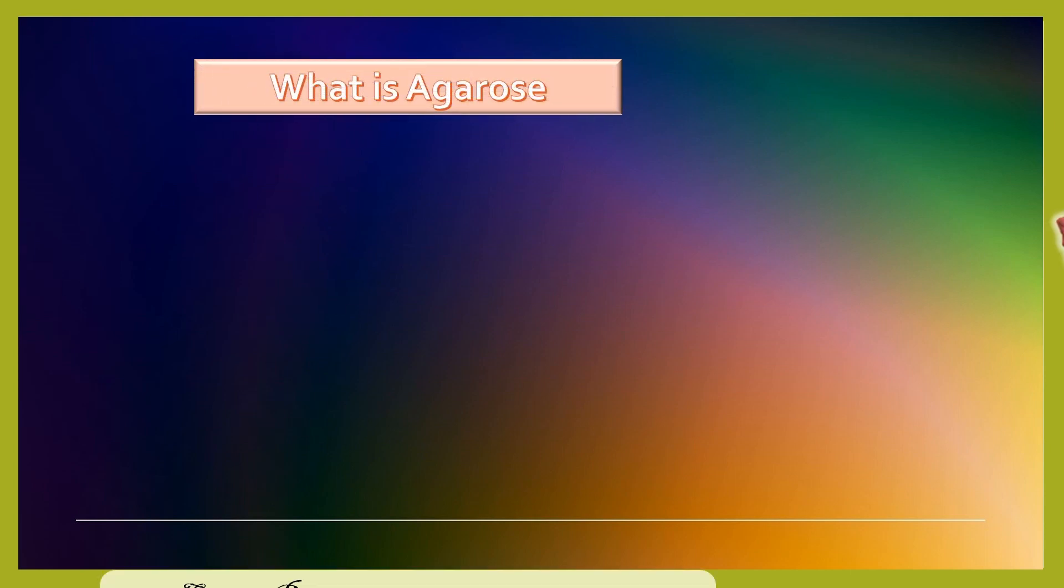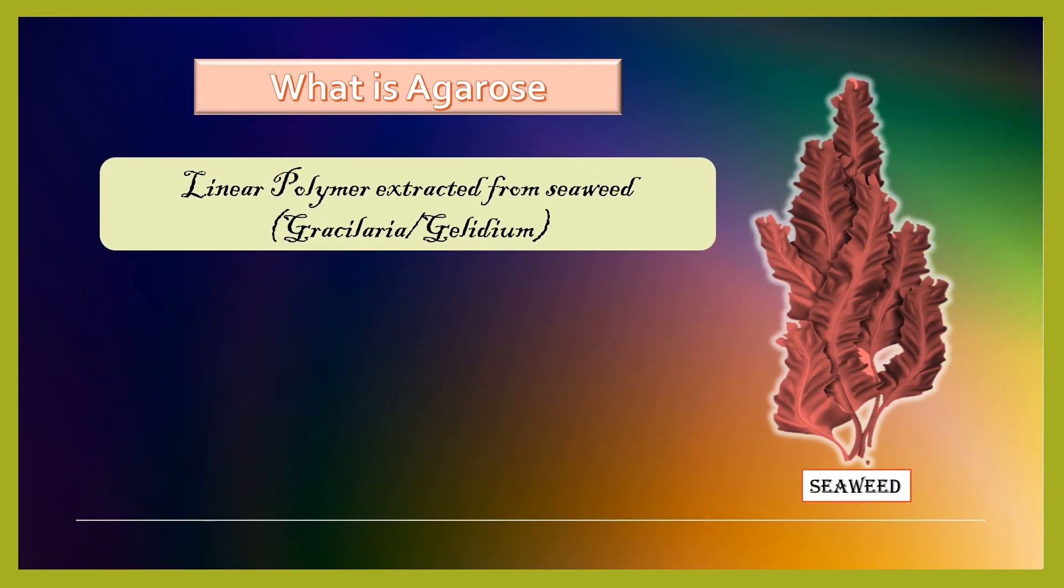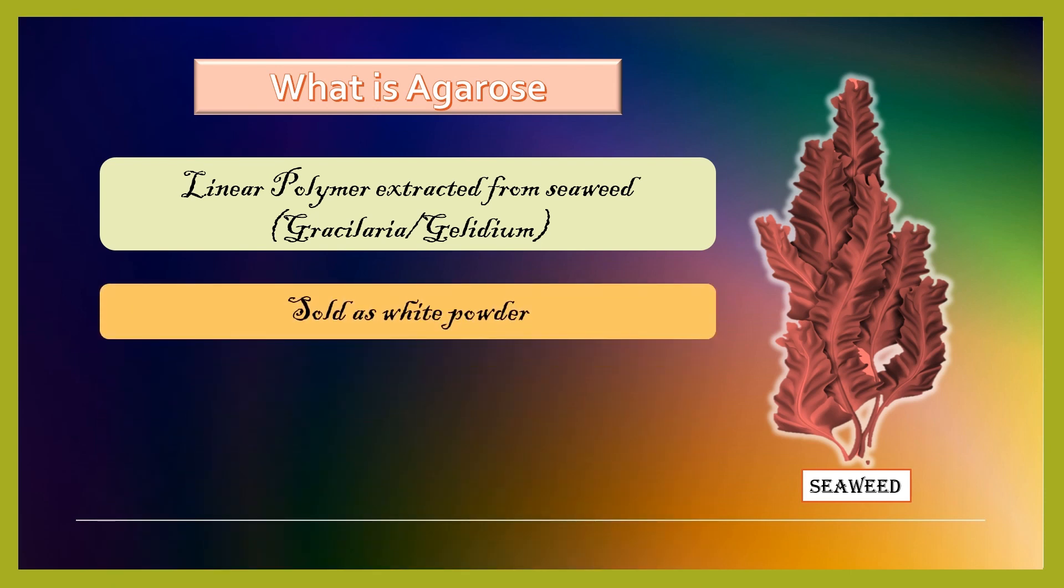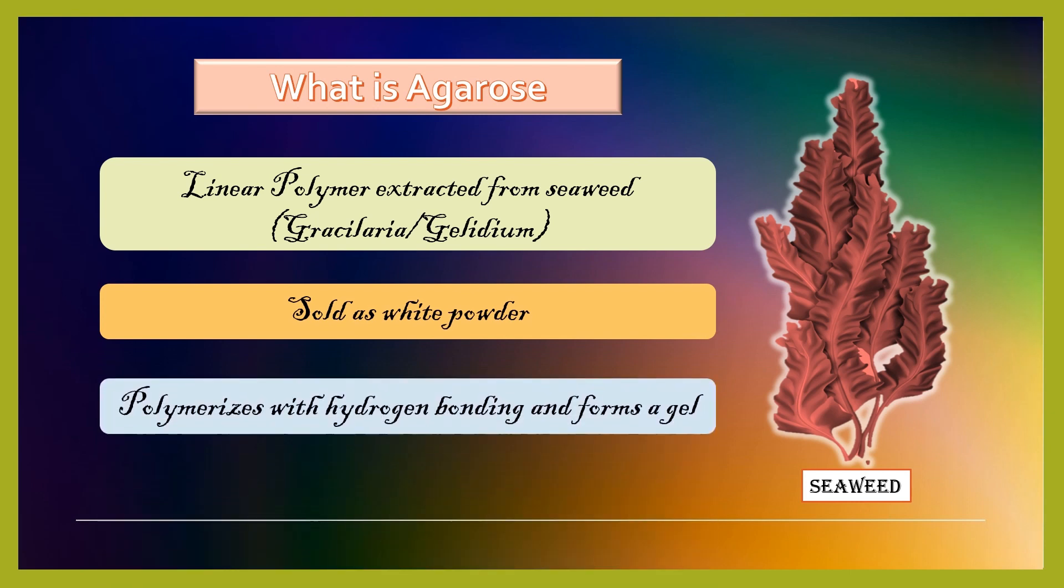Firstly, we will learn what is agarose. It is a linear polymer which is extracted from seaweed known as Gracilaria or Gelidium. The chemical is sold as white color powder which gets dissolved in a buffer on heating and polymerizes by hydrogen bonds to form a gel.